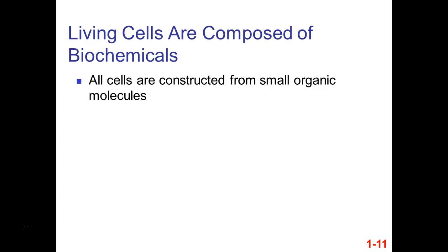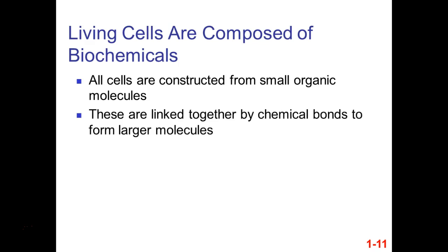So what makes up our cells? Cells are constructed from small organic molecules linked together by chemical bonds to form larger molecules. The four main macromolecules: proteins; nucleic acids like DNA and RNA; lipids; and carbohydrates, commonly also known as sugars.